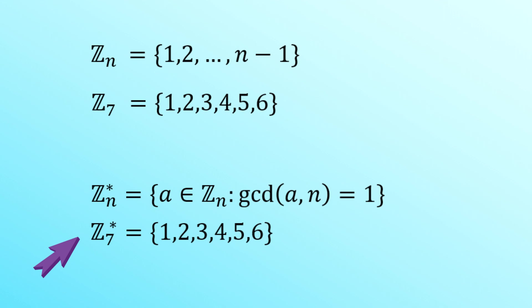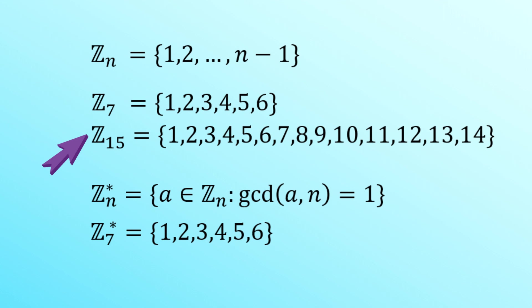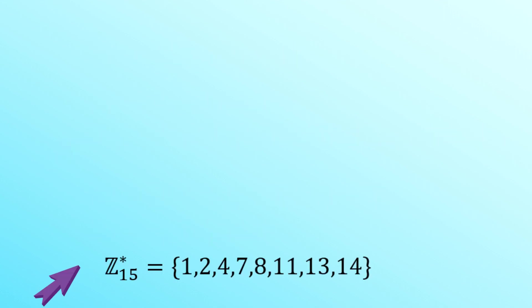Now in the case of 15, things get a little bit more complicated. Z 15 is just the set 1 through to 14. But Z star 15 means that we take that set that I just mentioned and we just retain the ones that have a GCD with 15 equal to 1.